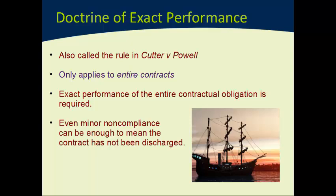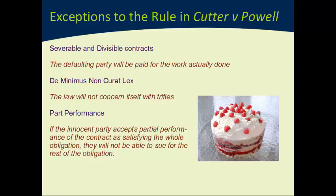Now this doesn't seem terribly fair — that someone can perform virtually all of their obligations and still not be entitled to anything in return. The law agrees, and so since the Doctrine of Exact Performance was established in Cutter v Powell, the law has created a number of exceptions. These six exceptions to the rule make a great deal of difference to the way the rule operates and to its potential for operating with unfairness.